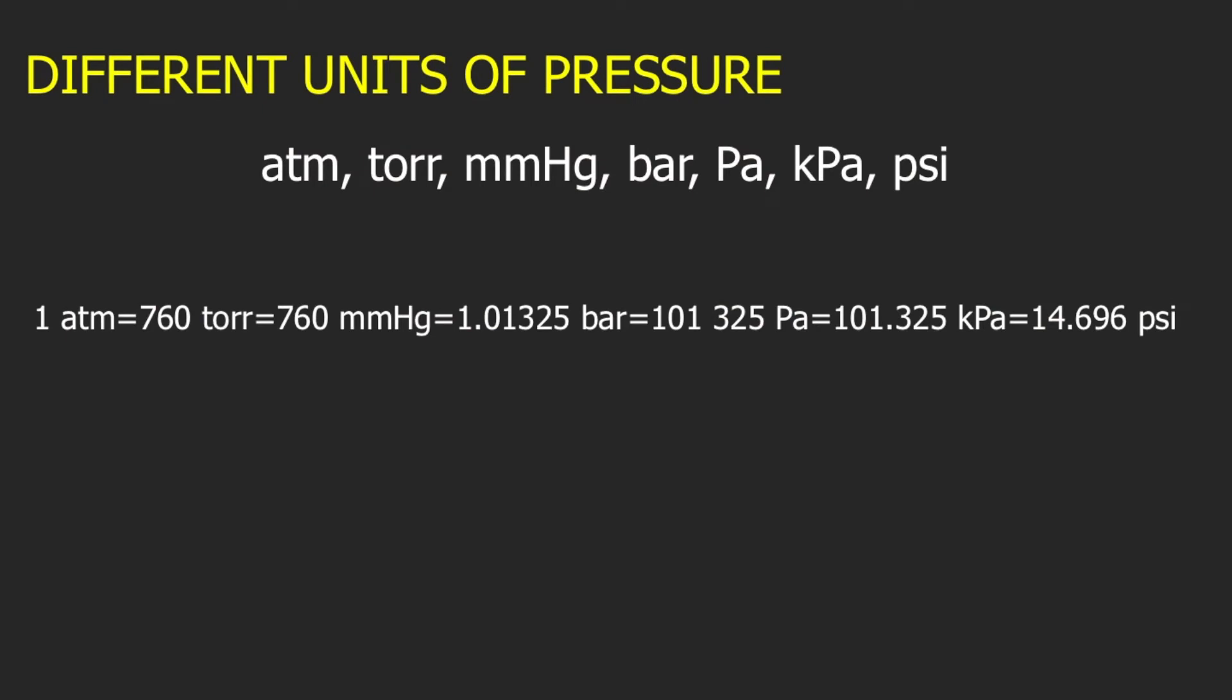Now, let's move on to the different units of pressure. There are many units of pressure, and I cannot enumerate them all in this video. So we will just talk about the most common units of pressure used in chemistry. We have here atm or atmosphere, torr, mmHg or millimeters of mercury, bar, pascal, kilopascal, and psi or pounds per square inch.